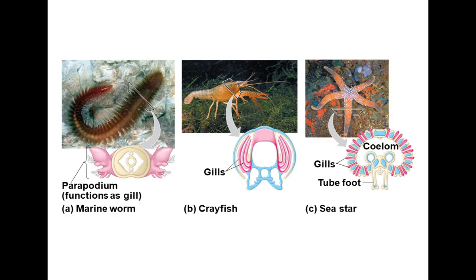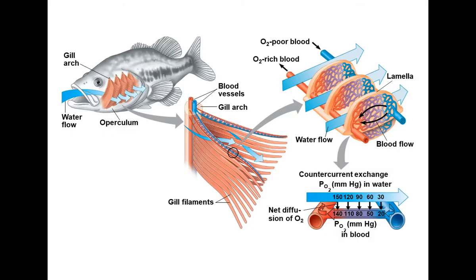Those are some examples of gills and adaptations that function as gills. If you look in the bottom right-hand corner, you will notice that as the water moves across the blood vessels, the partial pressure of oxygen in the water is always greater than the partial pressure of oxygen in the blood — no matter whether it's oxygen-rich or oxygen-poor — and so that allows oxygen to continue to diffuse across those blood vessels.